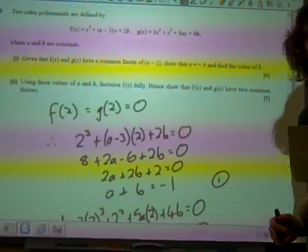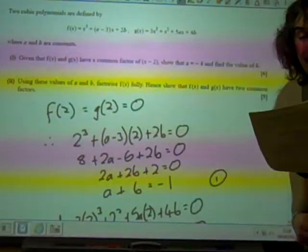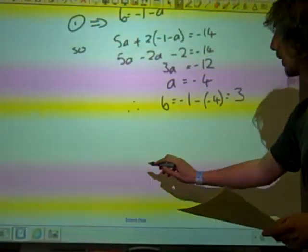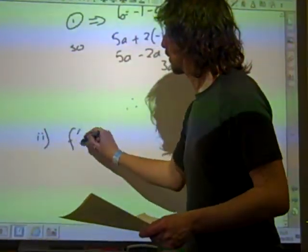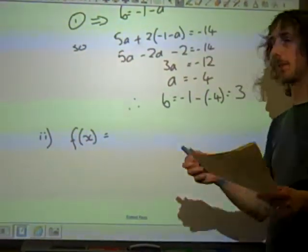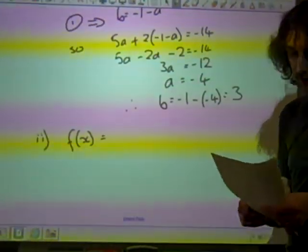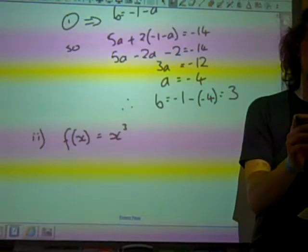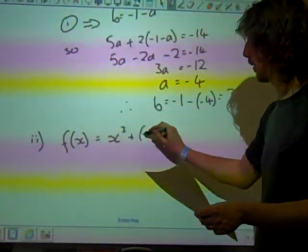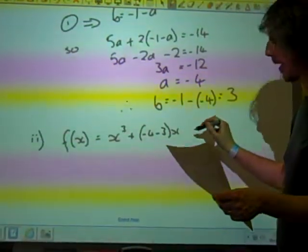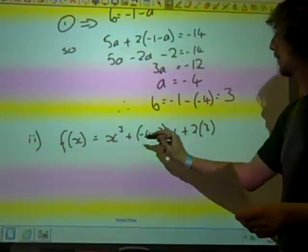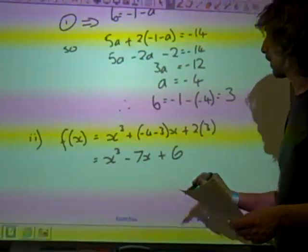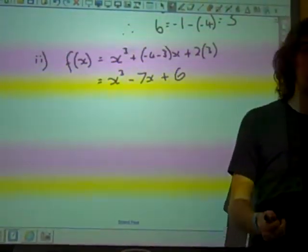Using these values of a and b, factorise f of x fully and show that they, in fact, have two common factors. Right. So f of x. Now that we know that a is minus 4 and b is 3, f of x is x cubed. It was a minus 3, wasn't it? So that's now going to be minus 4 minus 3 times x, and then it's 2b. So actually, f of x is x cubed minus 7x plus 6. Right. And factorise f of x fully.